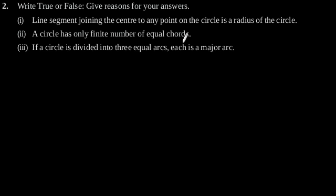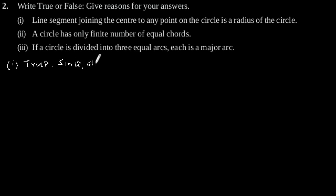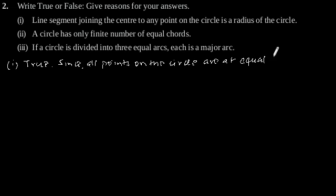Exercise 10.1, question number 2: Write true or false and give a reason for your answer. First: the line segment joining the center to any point on the circle is a radius of a circle. This statement is true, since all points on the circle are at equal distance from the center of the circle.